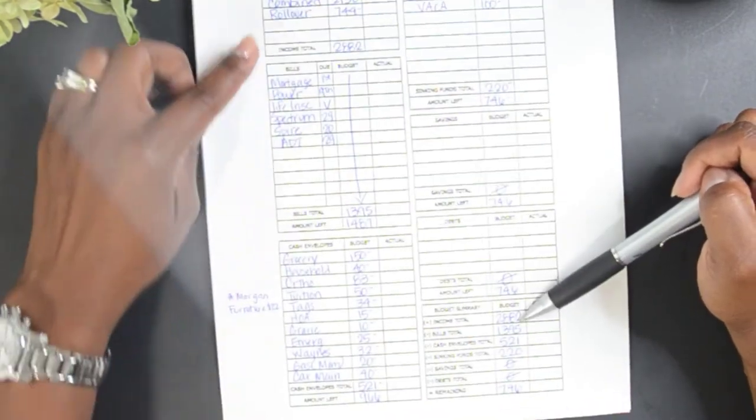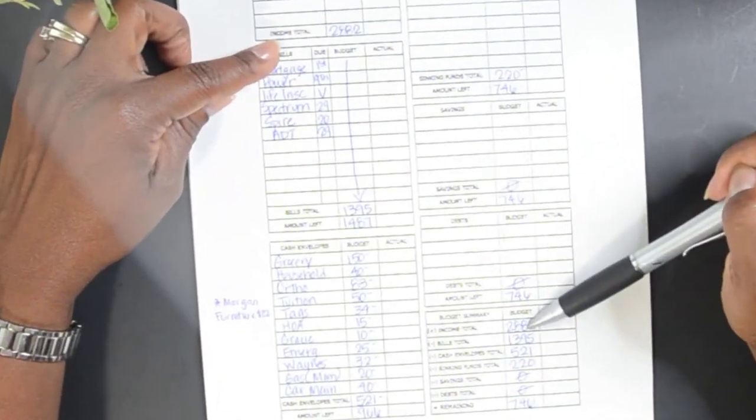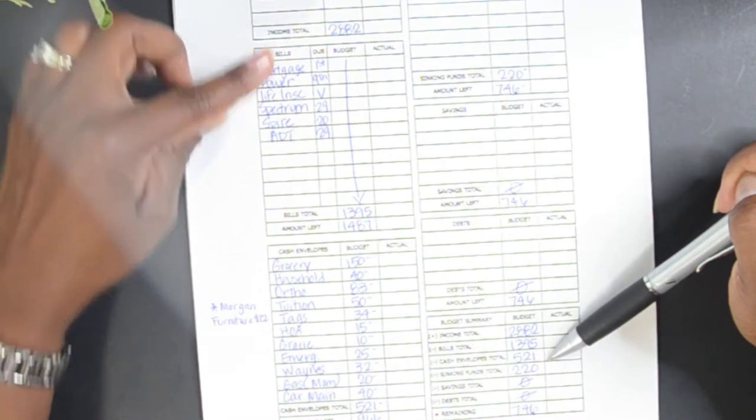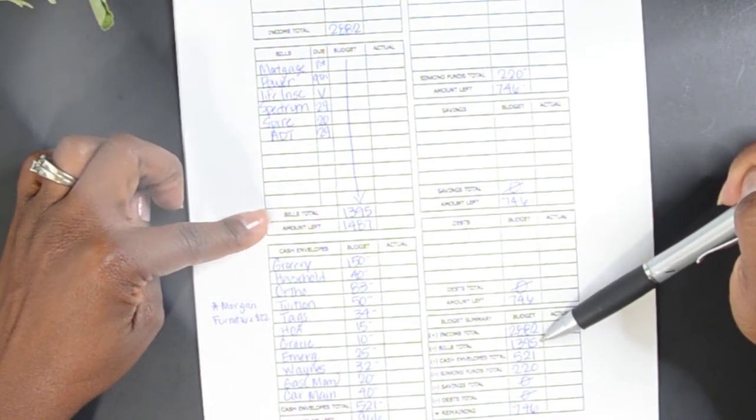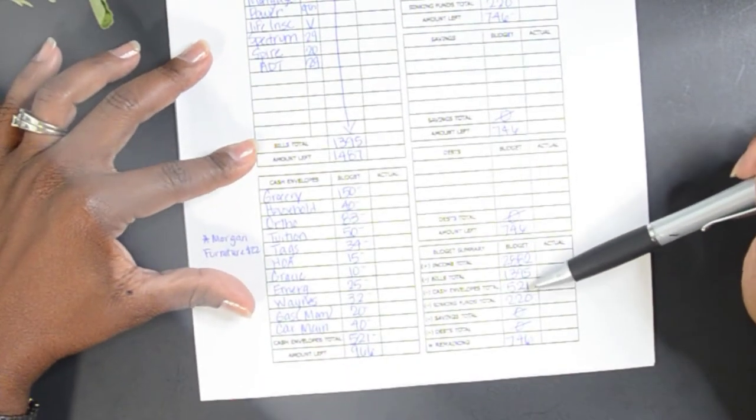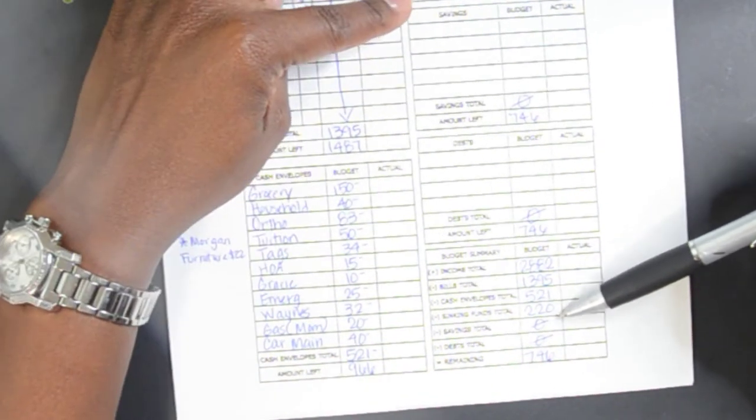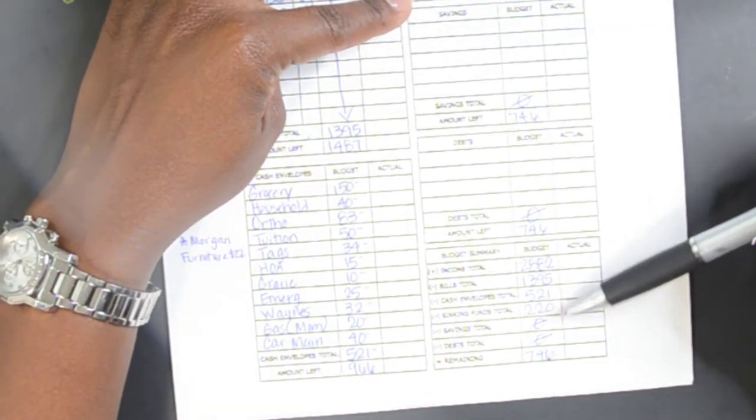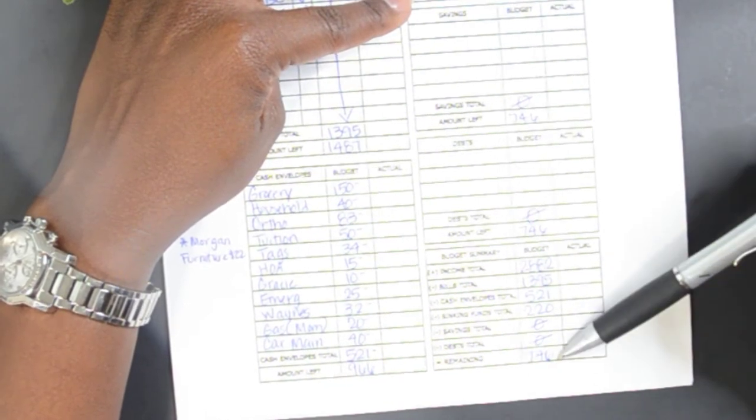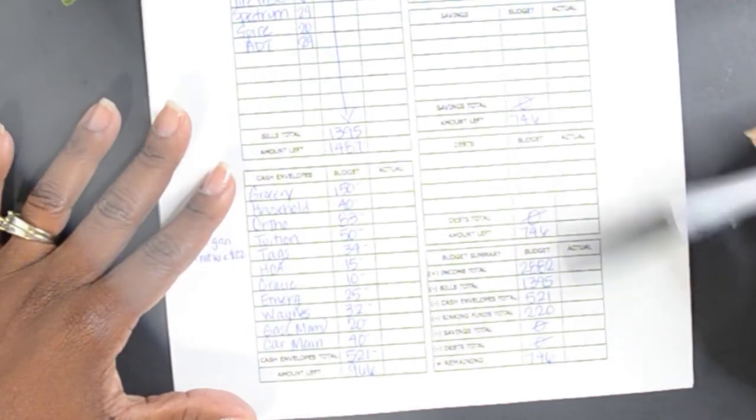So when we do our recap, our income is $2,882, our bills $1,395, our cash envelopes $521, our sinking funds is $220, no savings, no debt. And that leaves us a remainder of $746.